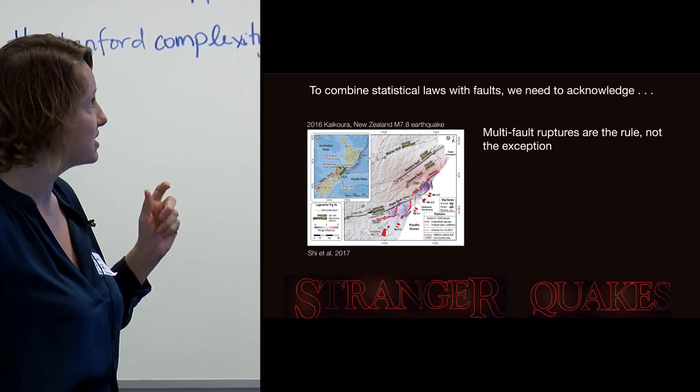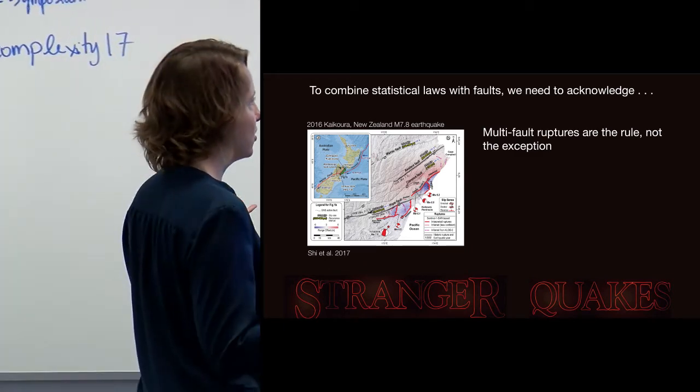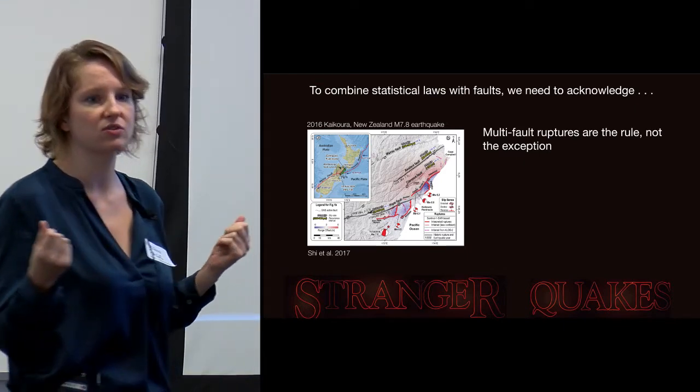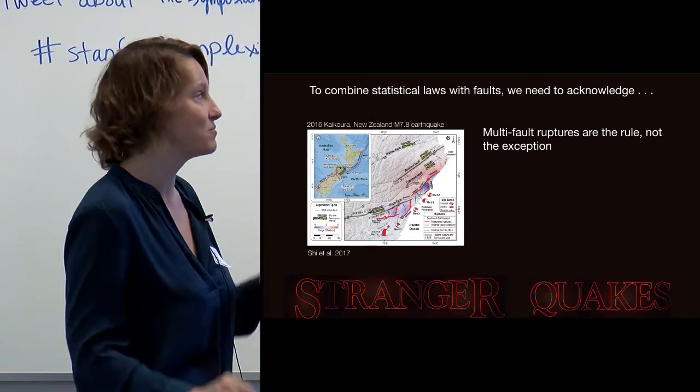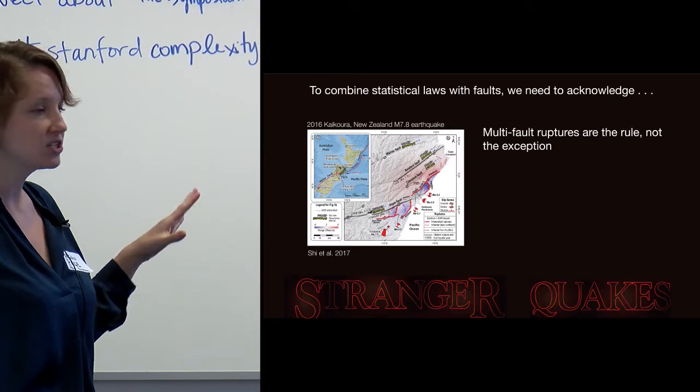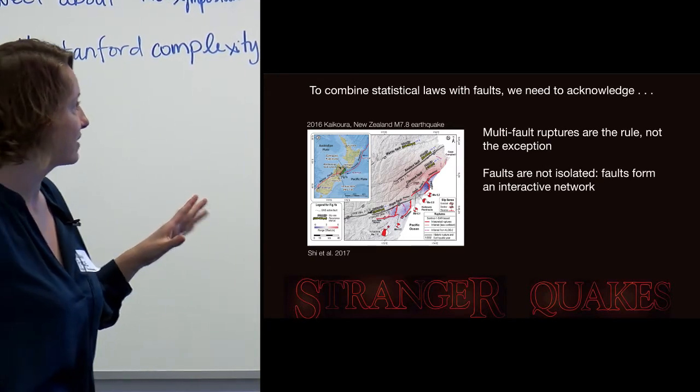So to combine statistical laws with faults, we have to acknowledge that these sort of weird earthquakes that we've seen are not really the exception. They're really the rule. The better data that we have following a large earthquake, the more and more we notice that this is what's really happening. Faults don't exist in isolation. They link up. They form an interactive network.